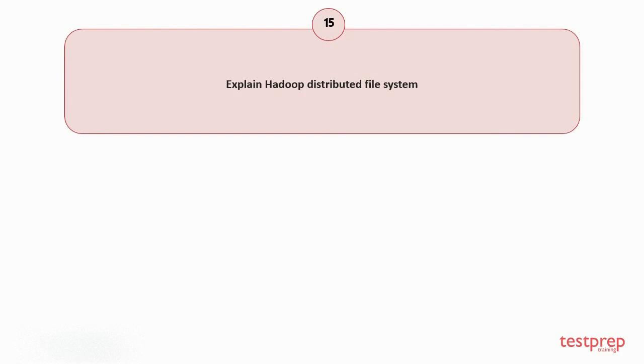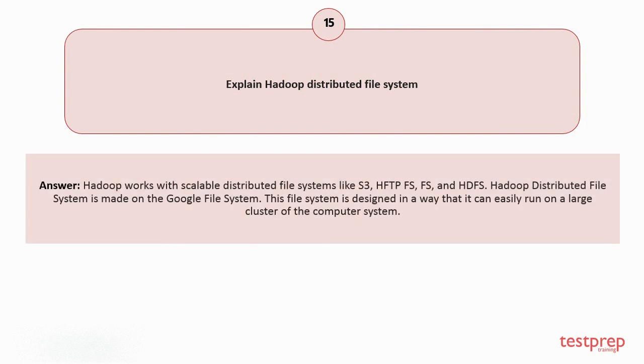Question number 15: Explain Hadoop distributed file system. Your answer is: Hadoop works with scalable distributed file systems like S3, HFTPFS, FS, and HDFS. Hadoop distributed file system is made on the Google file system. This file system is designed in a way that it can easily run on a large cluster of the computer system.